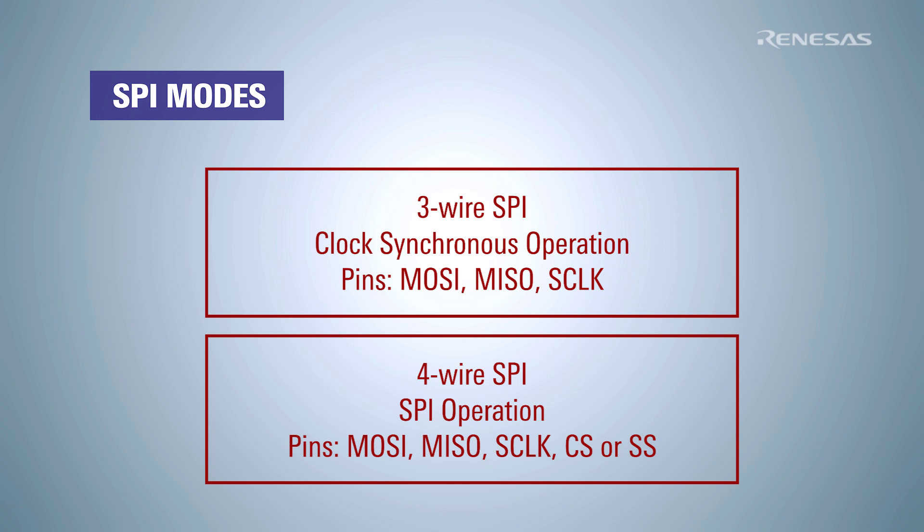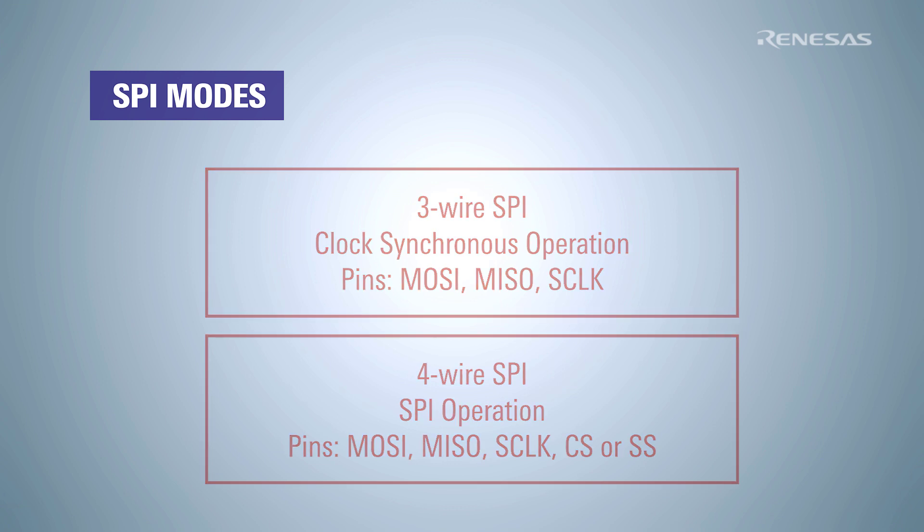In the Renesas RA MCU family, there are two modes of SPI operation: the 3-wire mode, also known as clock synchronous operation, and the 4-wire mode, also known as the SPI operation. For the 3-wire mode, the slave select line is not used.